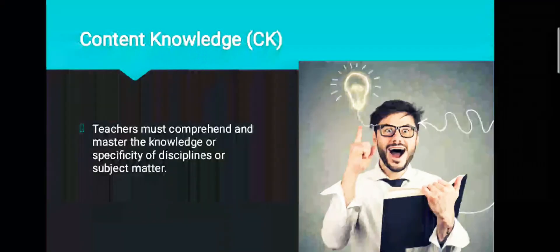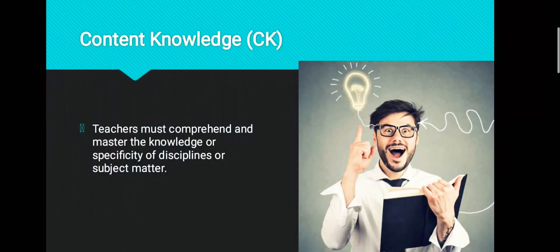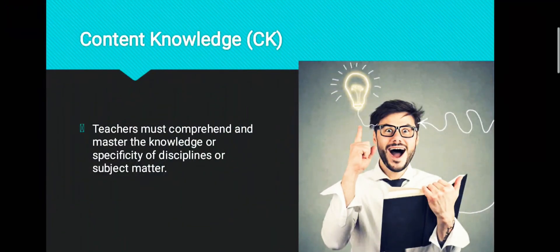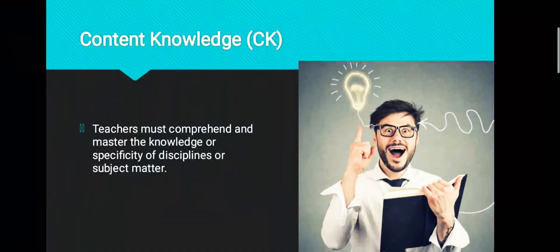Then, we have what is called Content Knowledge, or CK. CK leads to knowledge or specificity of disciplines or subject matters. CK is different at each level — for example, the differences between primary and secondary schools. A teacher is expected to master this knowledge to teach. CK is also important because it determines the specificity of thinking from certain disciplines in each study.